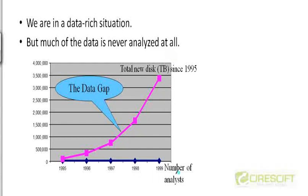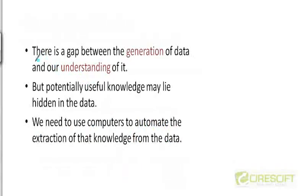If you look at the number of data analysts available to analyze that data, the number of analysts has gone up by only an insignificant amount — it's pretty much a flat curve. So you can see there is a gap between the amount of data being generated and the number of people available to analyze it. This is called the data gap — a gap between the generation of data and our understanding of it.